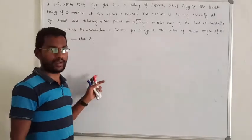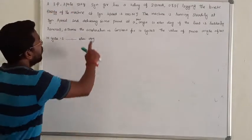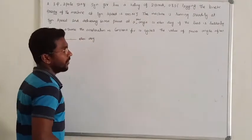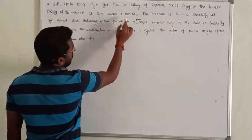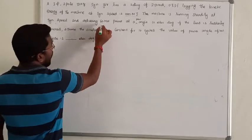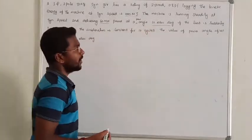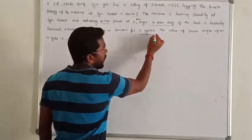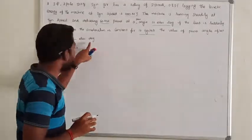Hello guys, stability and extra problem. A 3-phase, 2-pole, 50 Hz synchronous generator has a rating of 250 MVA, 0.8 power factor lagging. The kinetic energy of the machine at synchronous speed is 1000 MJ. The machine is running steadily at synchronous speed delivering 60 MW at a power angle of 10 electrical degrees. If the load is suddenly removed, assume the acceleration is constant for 10 cycles. The value of the power angle after 10 cycles is what, in electrical degrees?